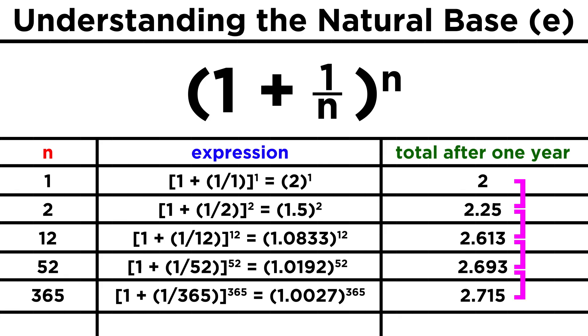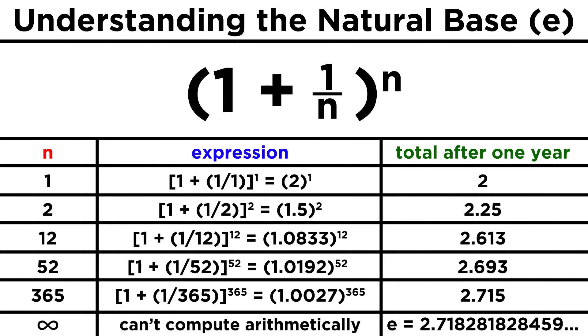Each increase in n produces a smaller and smaller increase in the value of the expression, or the additional money you'd have after a year. And as n becomes incredibly large, we get closer and closer to a particular number, but never quite get there.